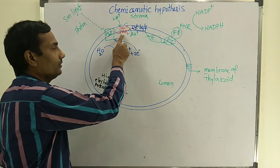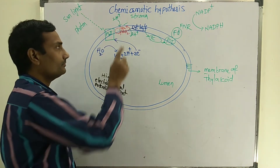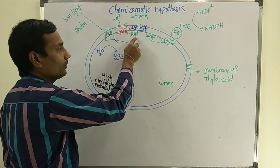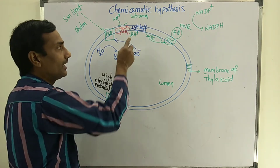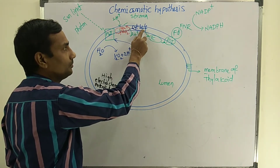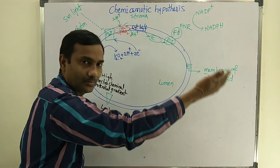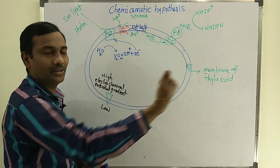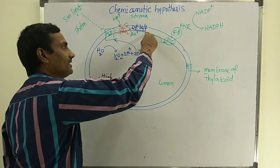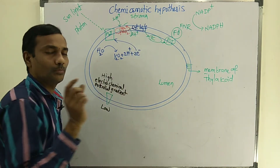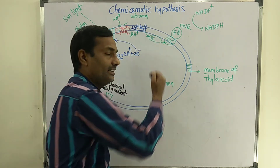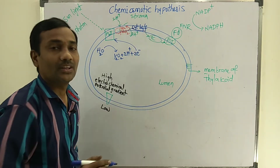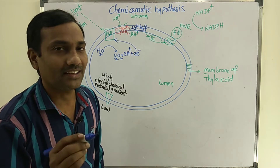The reduced plastoquinone — PQH2 — translocates 2 protons into the lumen. At the same time, electrons are transferred to cytochrome B6 and F, and the remaining electrons are shifted to neighboring electron carriers. Plastoquinone is also located on the inner side of the membrane, and it is a copper-containing mobile electron carrier. Electrons are then transferred from plastoquinone to PS1, which is Photosystem 1.